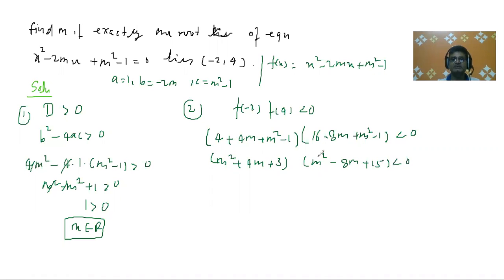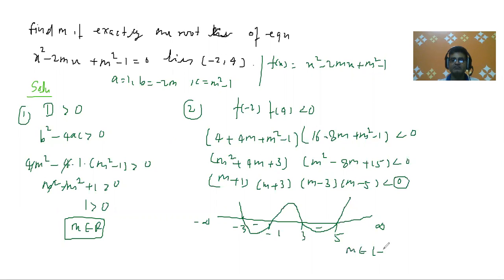We will have m² + 4m + 3. And f(4) will be 16 - 8m + m² - 1, which gives m² - 8m + 15. So (m² + 4m + 3)(m² - 8m + 15) < 0. We can factorize it. So we have (m + 1)(m + 3)(m - 3)(m - 5) < 0. Using the wavy curve method, m will lie between -3 to -1 or 3 to 5.